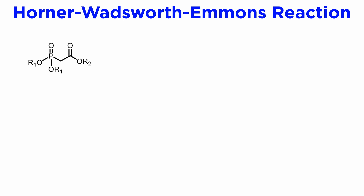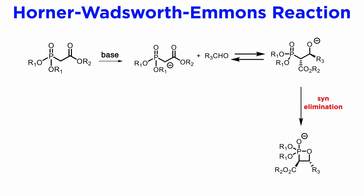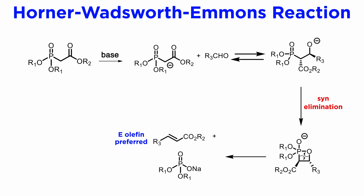The reaction consists of two steps, like the Julia reaction. First, the anion forms. This nucleophile attacks the electrophilic carbonyl group to yield a beta-phosphonyl alkoxide. This first step is usually reversible, and therefore the step determining the stereochemistry is usually the next one: the syn elimination of the phosphate anion via a cyclic intermediate, which leads to the E-olefin preferentially.